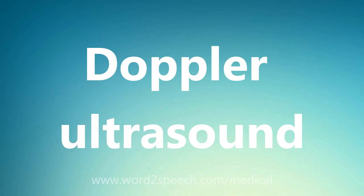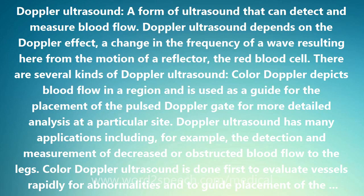Doppler Ultrasound is a form of ultrasound that can detect and measure blood flow. Doppler ultrasound depends on the Doppler effect, a change in the frequency of a wave resulting from the motion of a reflector — the red blood cell. There are several kinds of Doppler ultrasound.